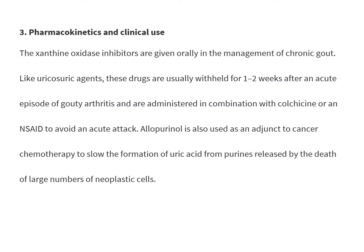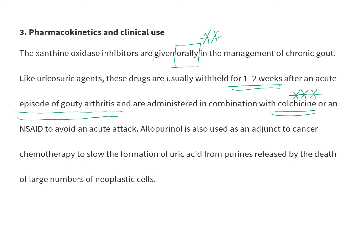Coming to pharmacokinetics — xanthine oxidase inhibitors are given orally. These drugs are usually withheld for one to two weeks after an acute episode of gouty arthritis and are administered in combination with colchicine. This is a common exam question: with what drug do you administer allopurinol? It is either colchicine or an NSAID, and the reason is to avoid triggering an acute attack.